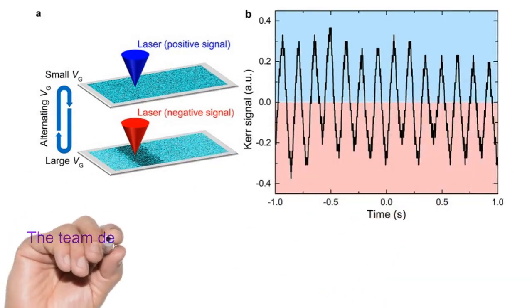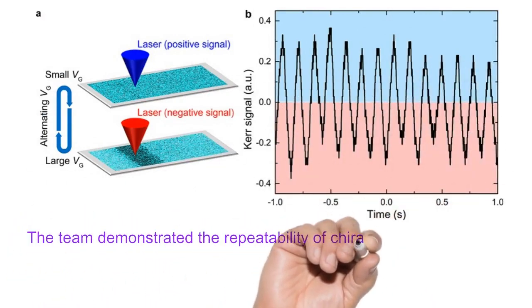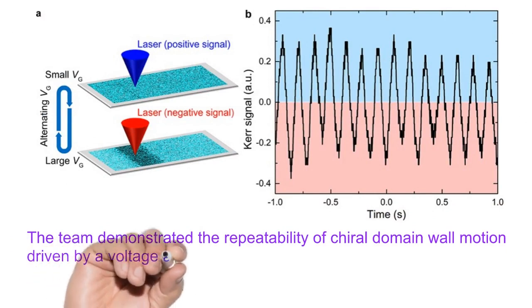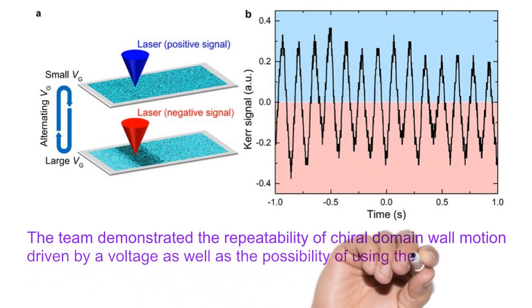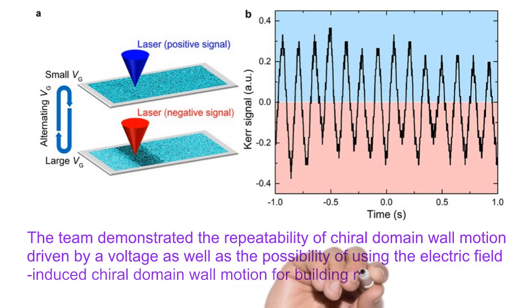The team demonstrated the repeatability of chiral domain wall motion driven by a voltage as well as the possibility of using the electric field-induced chiral domain wall motion for building memory devices.